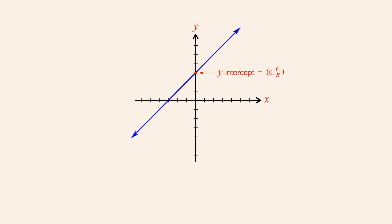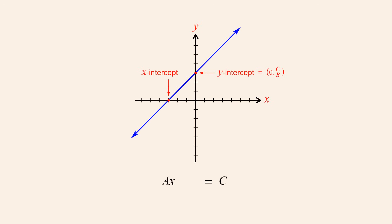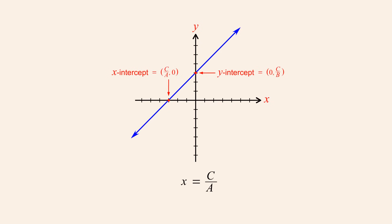We can determine the x-intercept in a similar fashion. Since every point on the x-axis has a y-coordinate of zero, we can set y to zero, causing the y-term to vanish, and solve the equation for x. So the x-coordinate of the x-intercept is c over a.